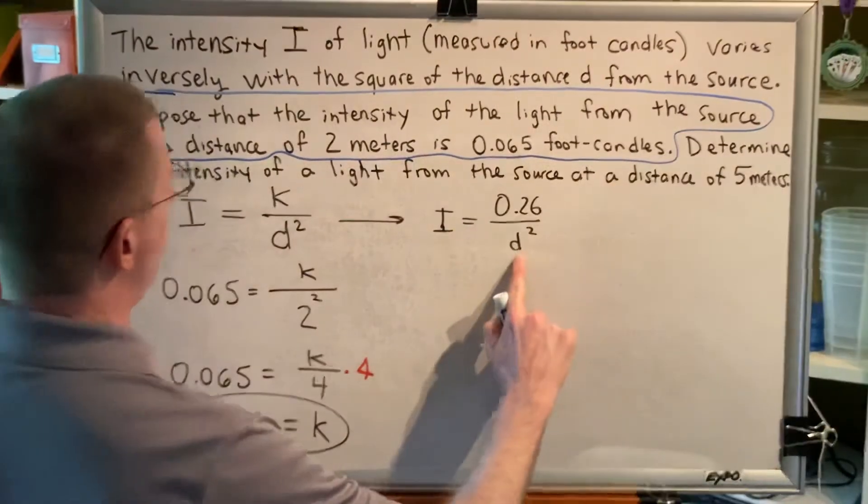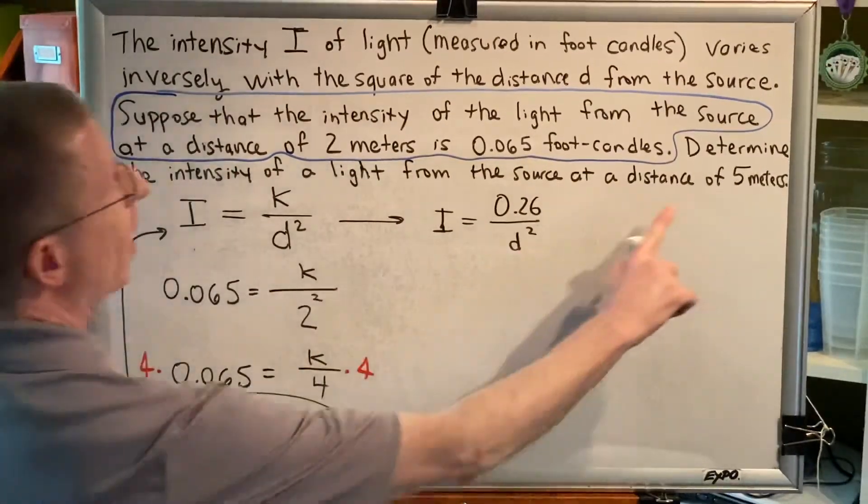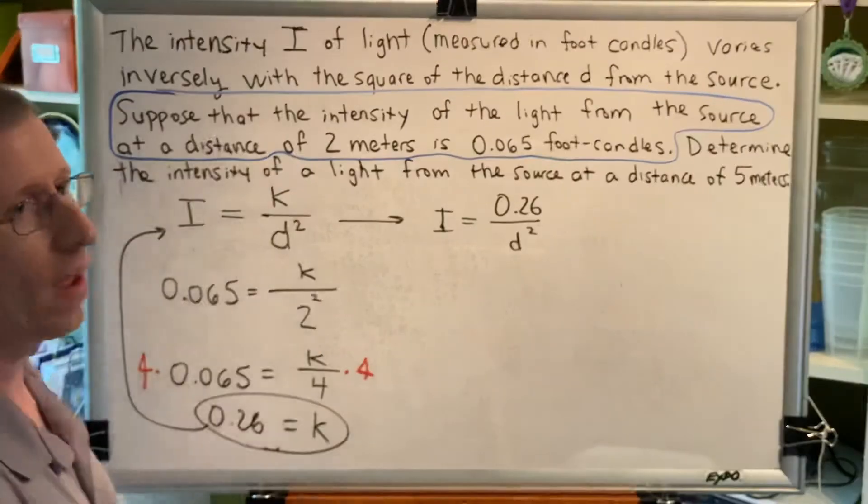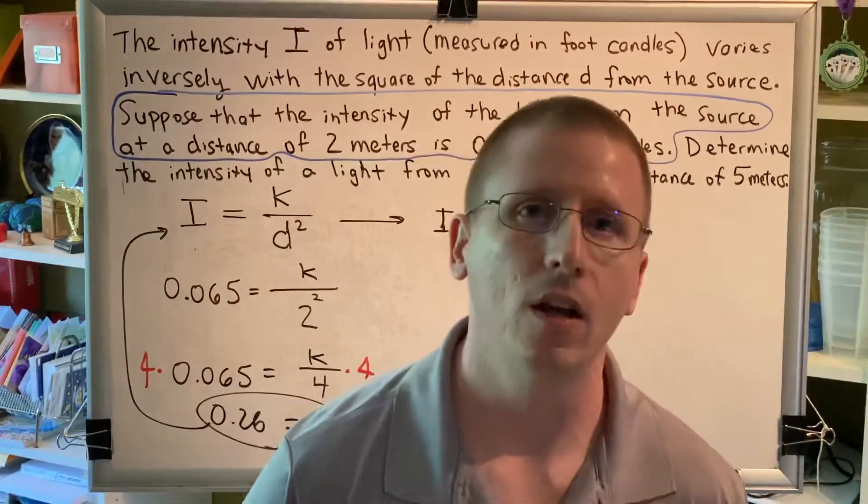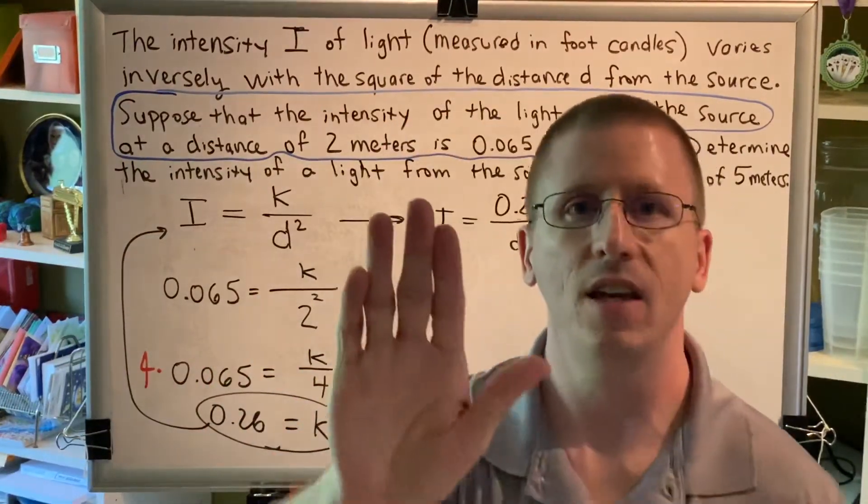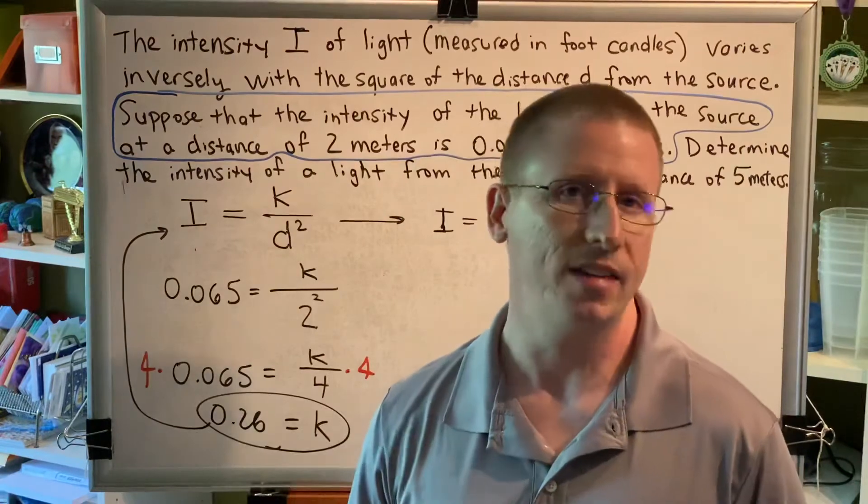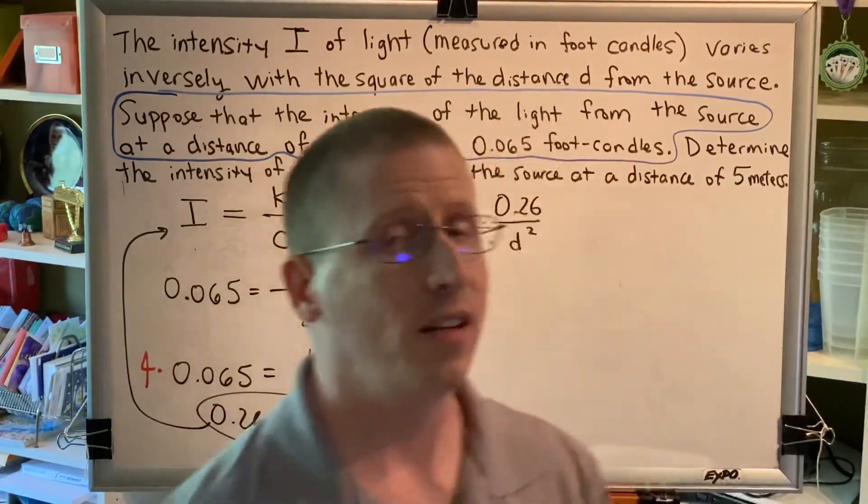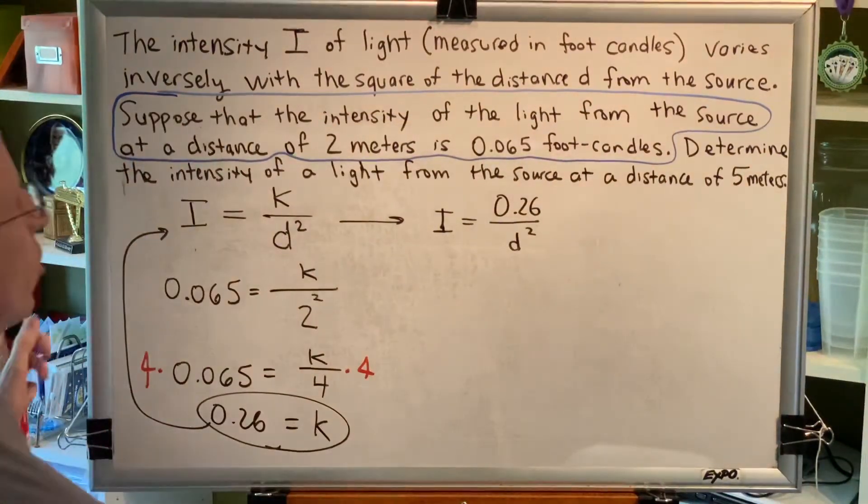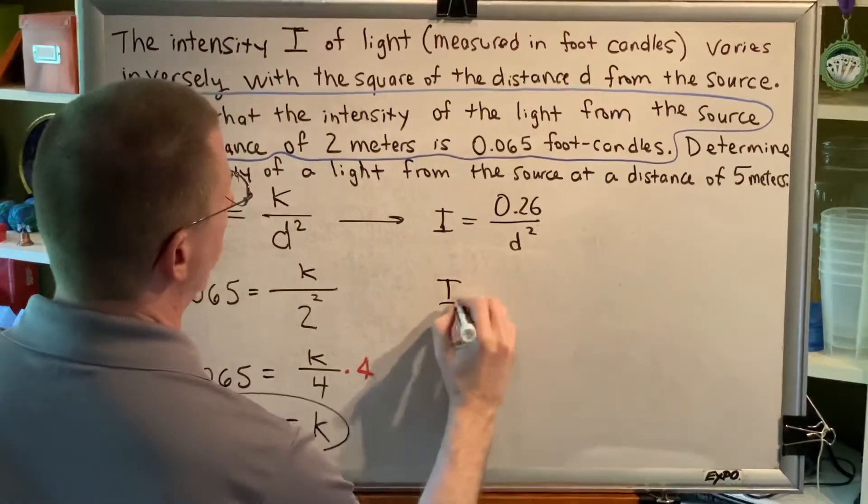Determine the intensity of light when the distance is 5 meters. So, that means instead of D being 2, like it was before, now we're increasing the distance to 5. Now, what happens, do you think, when the distance is increasing? What do you think will happen to the light intensity? I hope you said it decreases, because that's the correct answer.